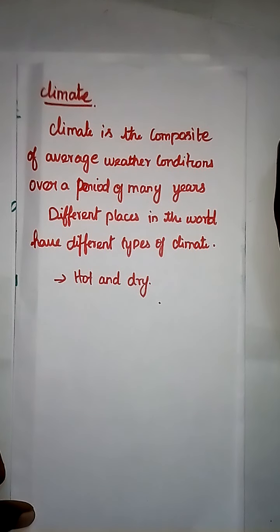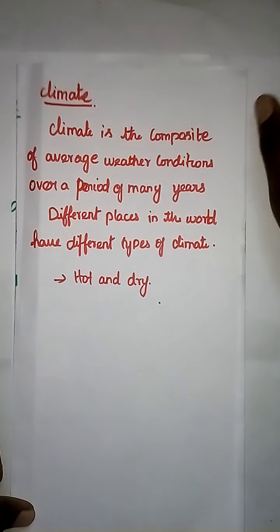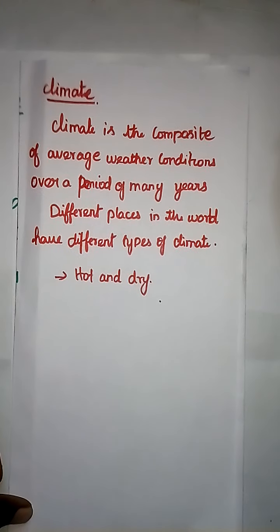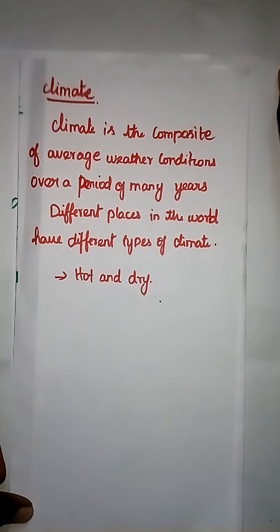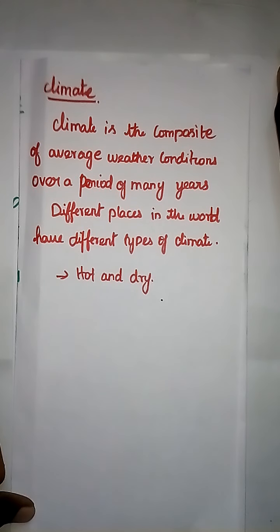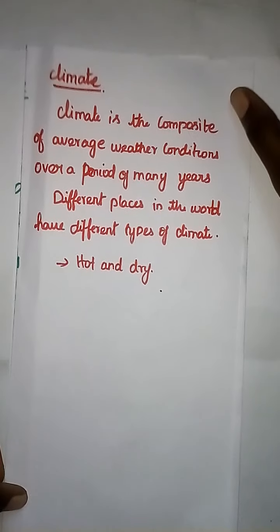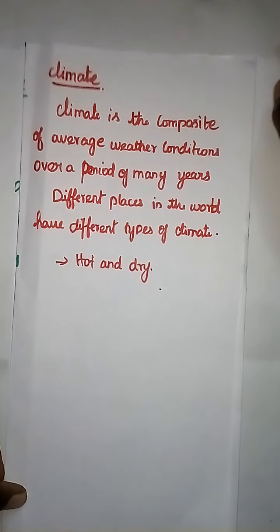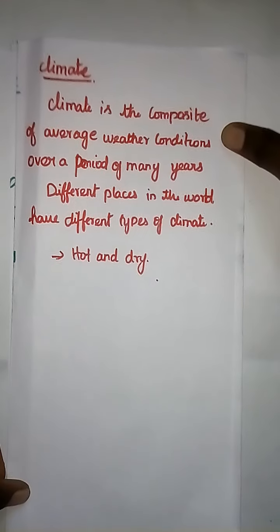Some places are very cold — for example, Antarctica. That place is very cold. Then there are very hot places: Australia, Rajasthan, and Maharashtra. Those places are very hot places.